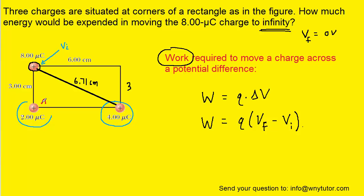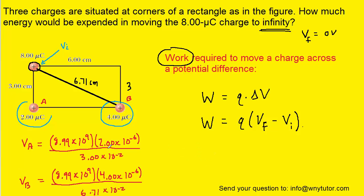Now we can call the 2 microcoulomb charge A and the 4 microcoulomb charge B. Let's go ahead and calculate the potential produced by charge A and then also the potential produced by charge B. The equation used to find electric potential produced by point charges is equal to K times the charge divided by the distance. Notice for the charges we multiply by 10 to the minus 6 to convert to coulombs, and for the distances we multiply by 10 to the minus 2 to convert centimeters into meters.